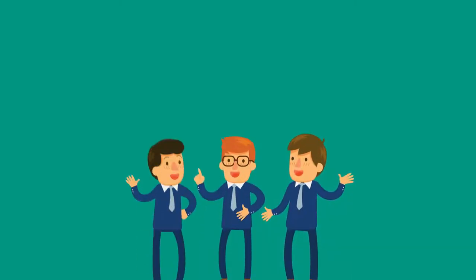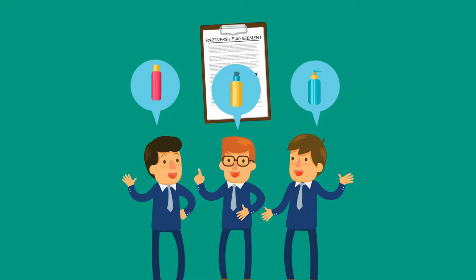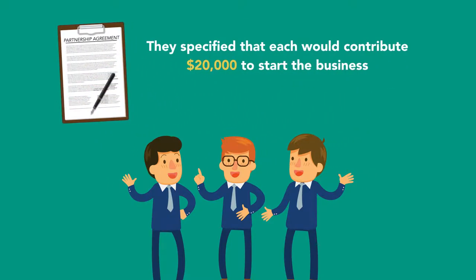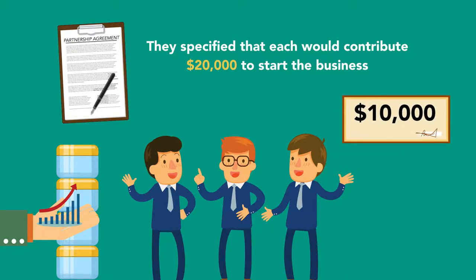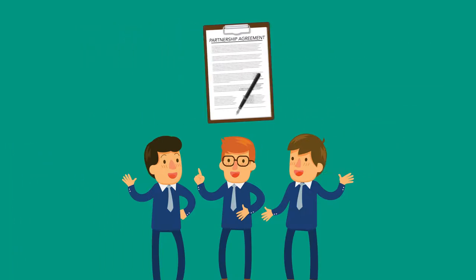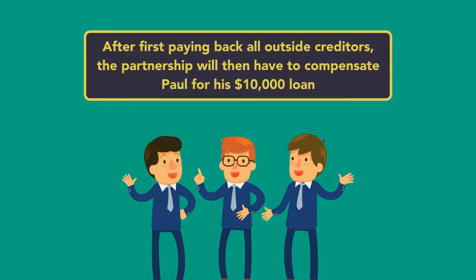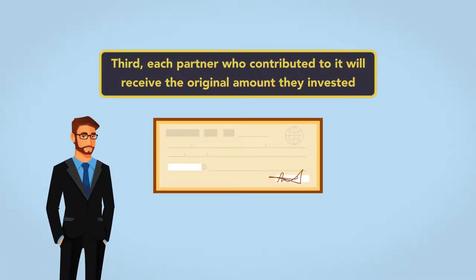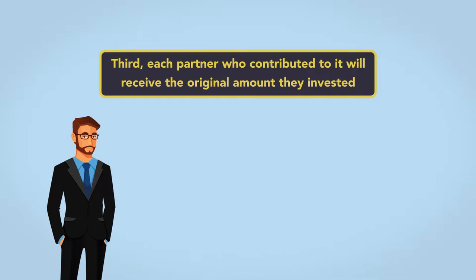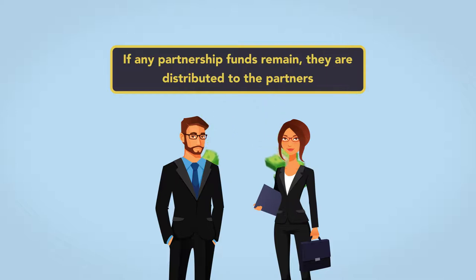For example, Paul, Michael, and Vincent form a general partnership to sell hairstyling products. In the partnership agreement, they each contributed $20,000 to start the business. In the first year, there were unforeseen cost increases for ingredients needed to make hair gel, and Paul loaned the partnership an additional $10,000 so it could purchase needed materials. Ten years later, all three decide to dissolve the partnership. After first paying back all outside creditors, the partnership must then compensate Paul for his $10,000 loan. Third, each partner receives the original amount they invested. Finally, if any funds remain, they are distributed to the partners.